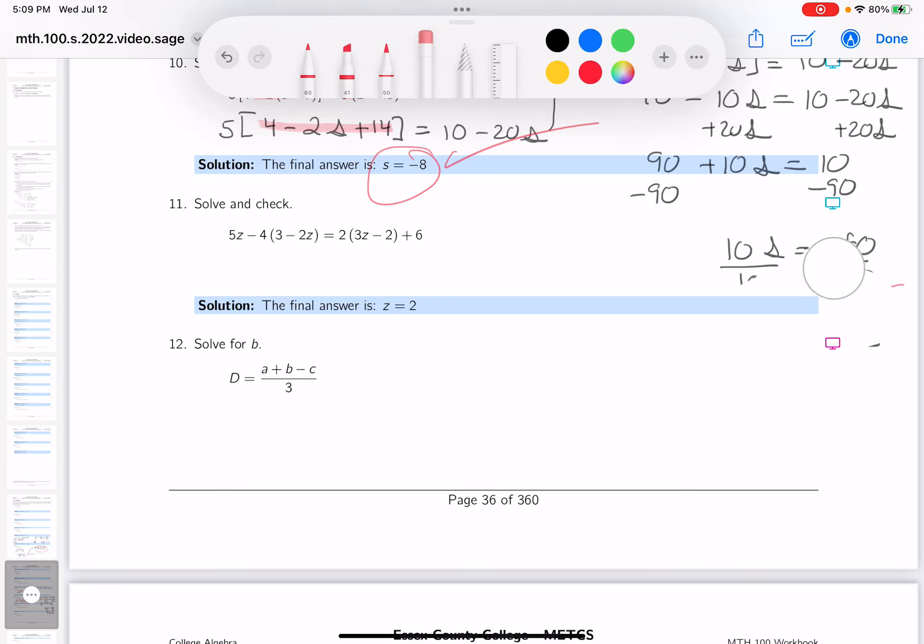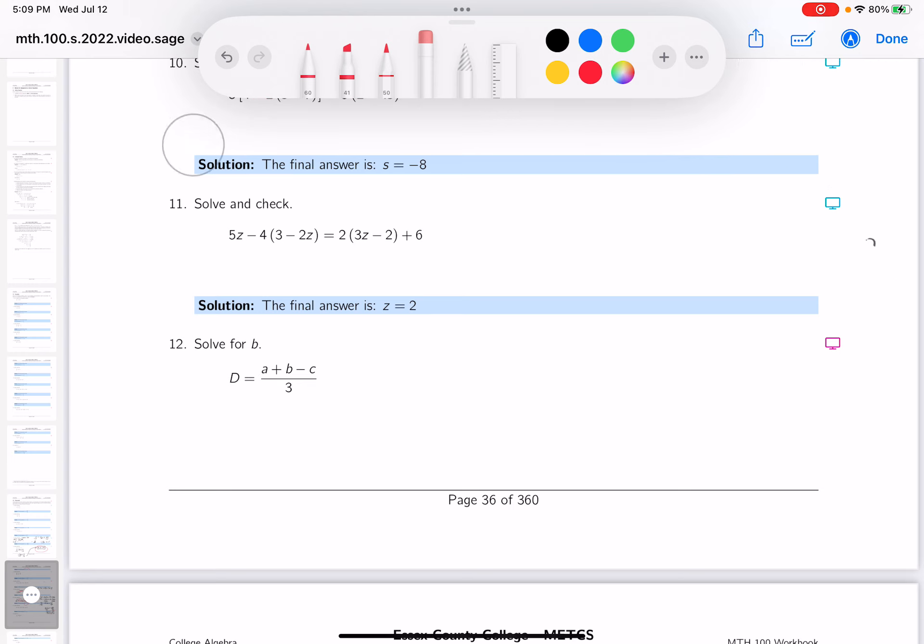Alright, we're on problem number 11 now. Let me get rid of some scratch work from the other problem. What are you seeing over here in the equation? I need to remove the grouping symbols. Let's talk about the first step.